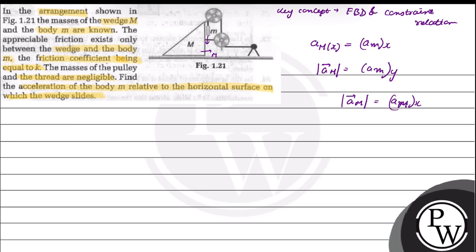So acceleration of small m will be equal to acceleration of small m in x-direction i-cap minus acceleration of small m in negative y-direction. This will be equal to a_mx i-cap minus a_mx j-cap, because we know that small m a_y is equal to small m a_x.